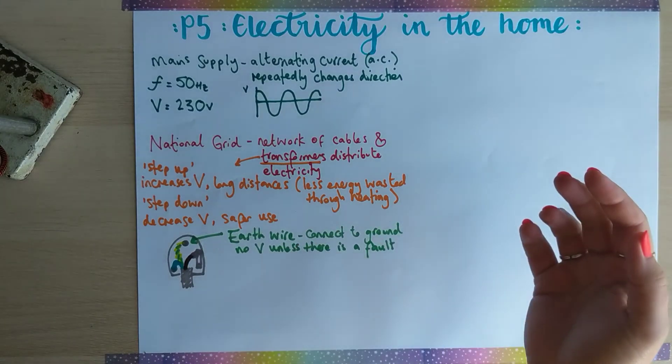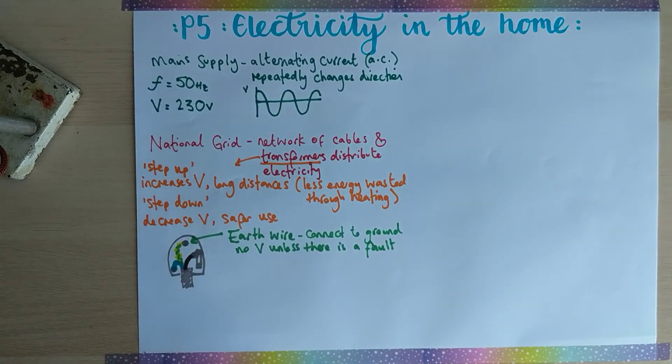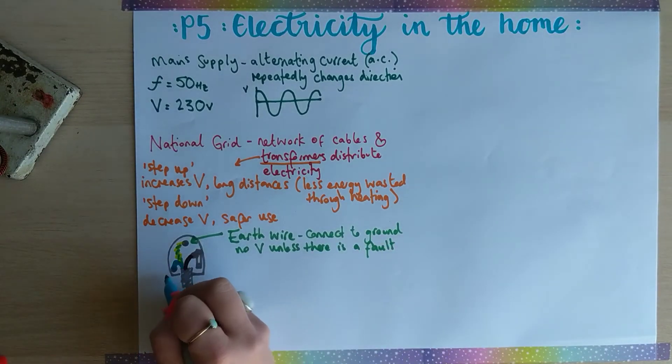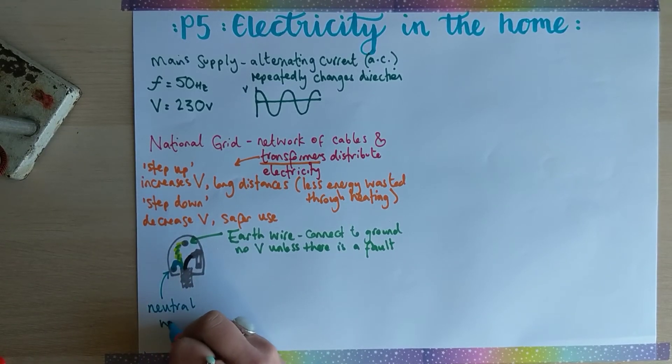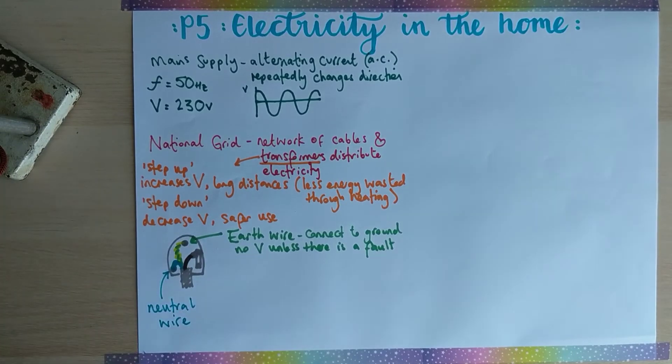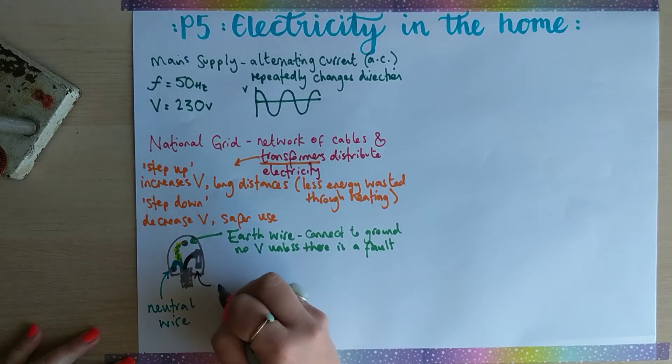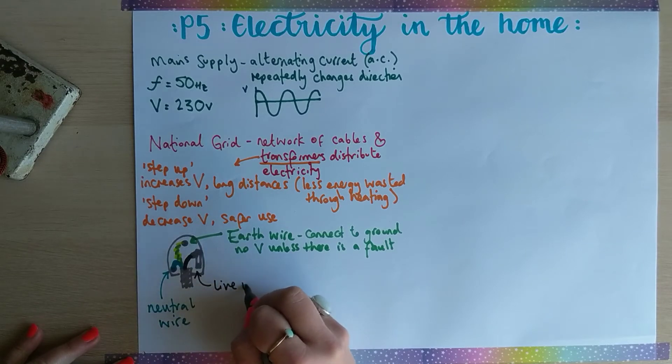The blue is the neutral wire, and the brown is the live wire. The live wire carries the current.